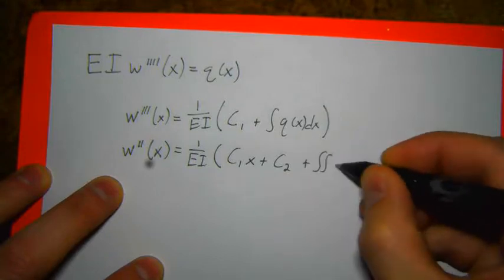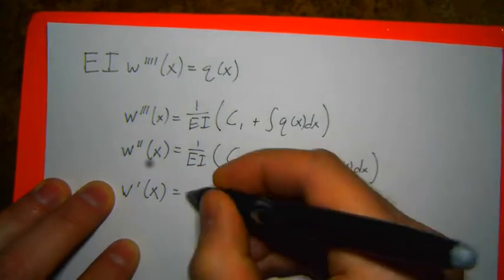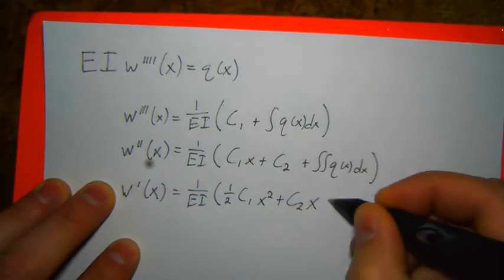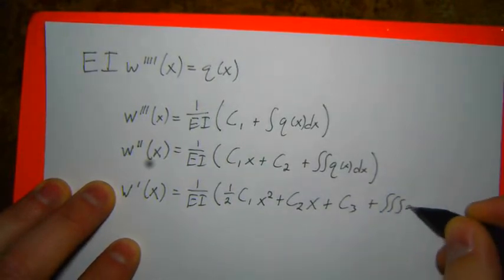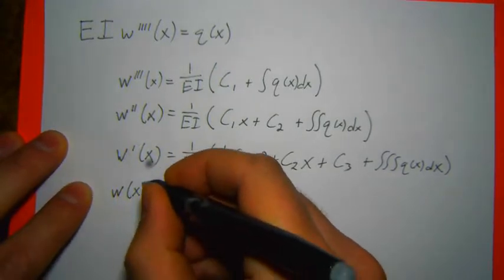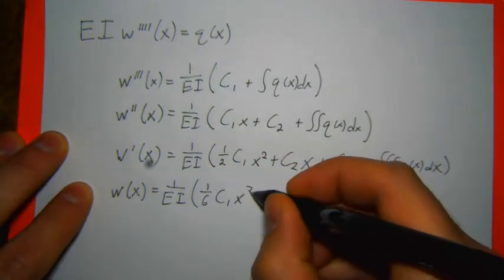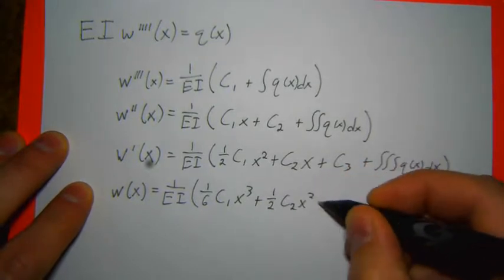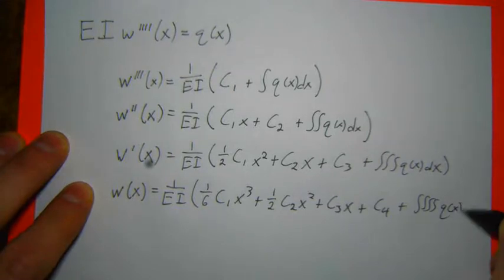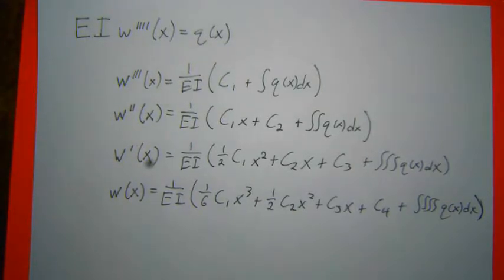Continuing the integration: w'' = (1/EI)[½C1·x² + C2·x + C3 + ∬q(x)dx²], and w(x) = (1/EI)[⅙C1·x³ + ½C2·x² + C3·x + C4 + ∫∫∫∫q(x)dx⁴]. This is now the general solution to our Euler-Bernoulli beam equation.